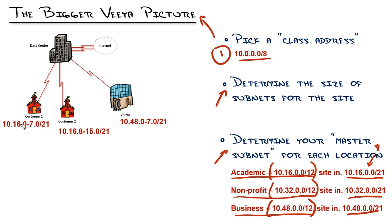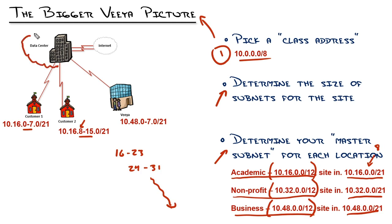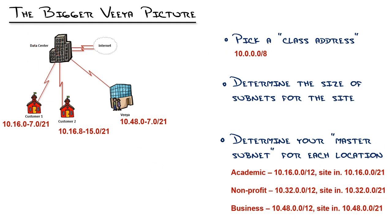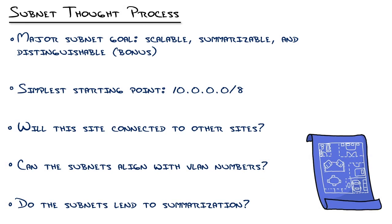A /21 gives you that increment of eight. So you can see right here, as we looked at our academic customers, we've got 10.16.0 through 7, 8 through 15 — that increment of eight — and if we kept going, it'd be .16 through 23, 24 through 31, and so on, allocated to each school connected to that cloud. When we talk to customers about the data center, we don't say data center anymore — it's the cloud. We found that this would give us a scalable, summarizable, but not quite distinguishable subnetting scheme for each site.